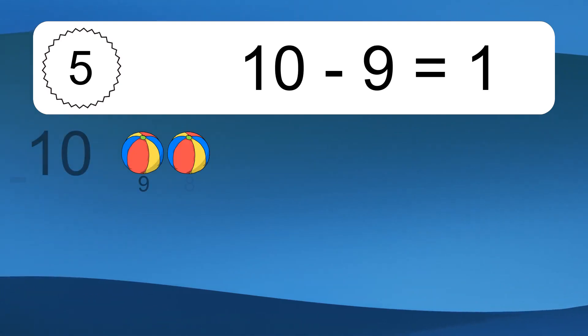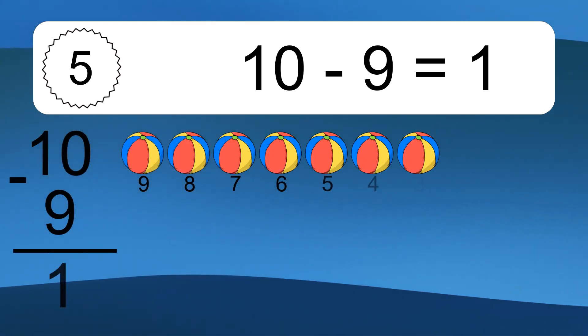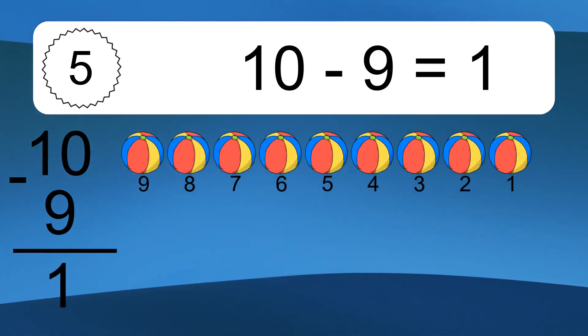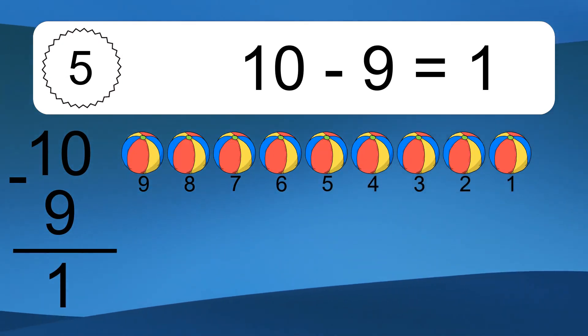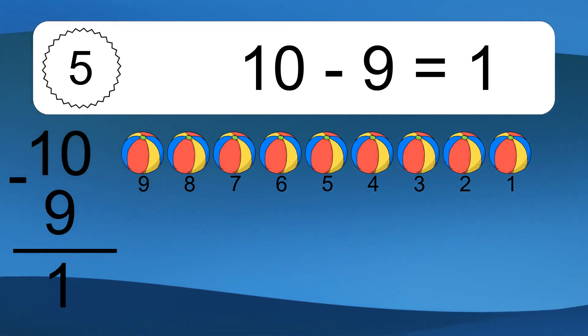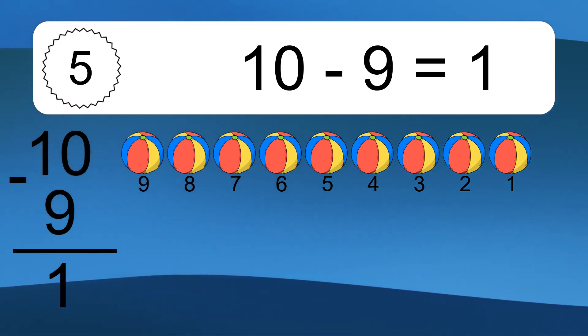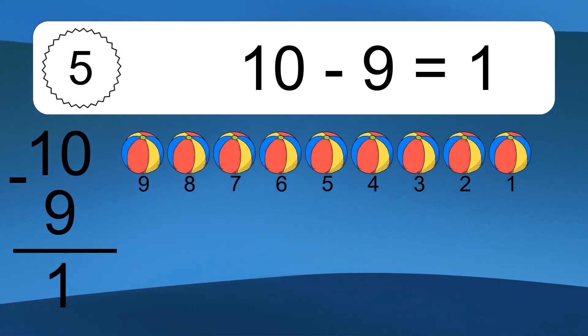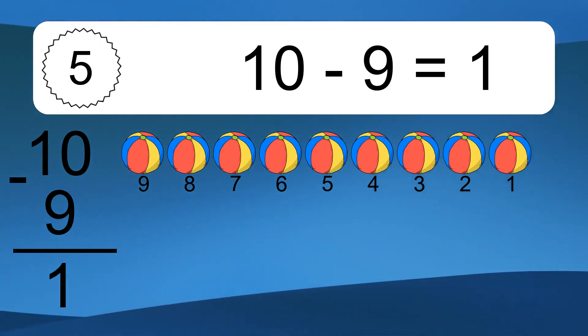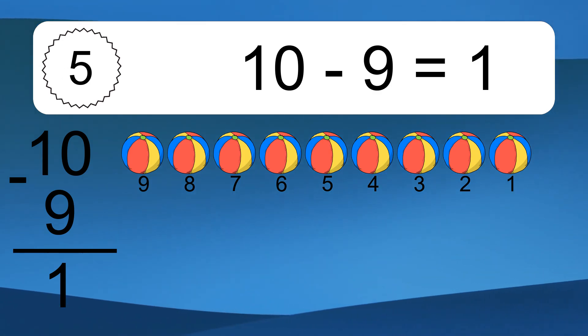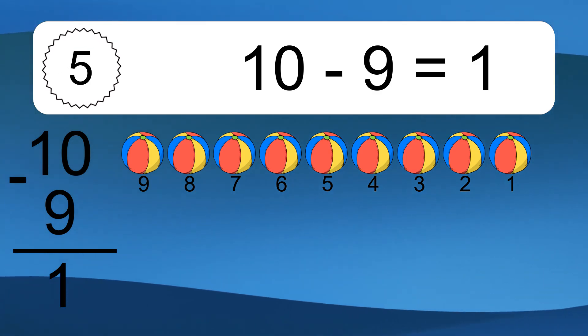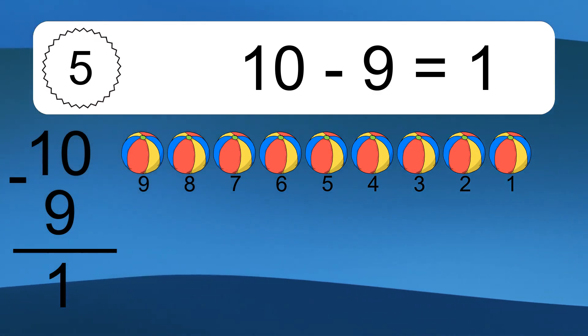10 minus 9 equals what? 10 minus 9 equals 1. Let's count it. 9, 8, 7, 6, 5, 4, 3, 2, 1.